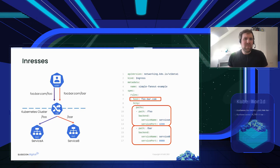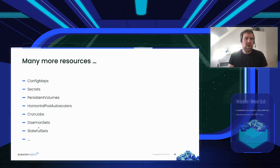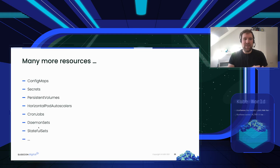Those are the basics for this Kubernetes and Rancher introduction. There are many more resources — ConfigMaps and Secrets for key-value configuration storage, PersistentVolumes, auto-scalers, CronJobs, and much more — but going into all of them would be too much detail for this presentation.